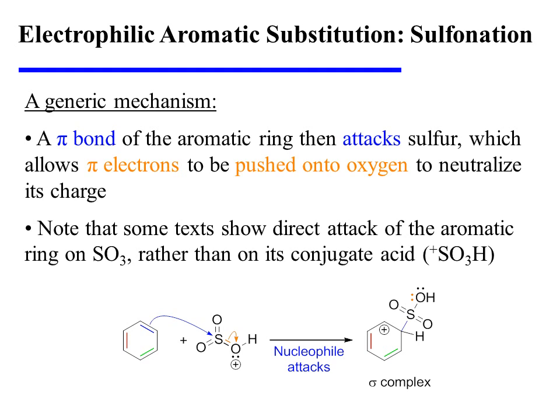A pi bond of the aromatic ring then attacks sulfur, which allows pi electrons to be pushed onto oxygen to neutralize its charge. Note that some texts show the direct attack of the aromatic ring on sulfur trioxide rather than on its conjugate acid. The result in either case is the formation of a sigma complex in which a carbocation resides on the ring.